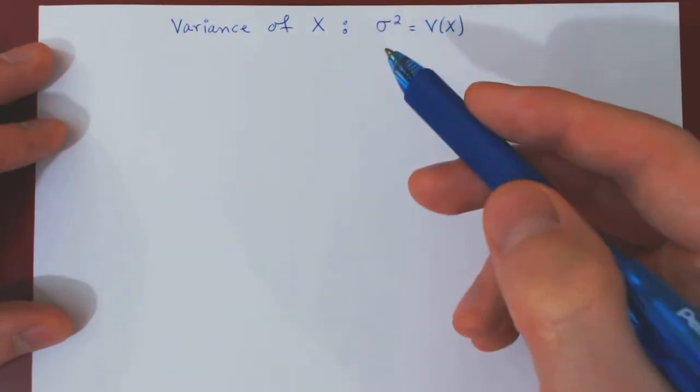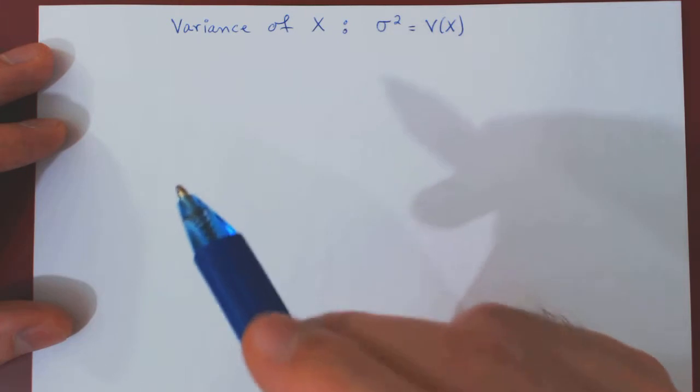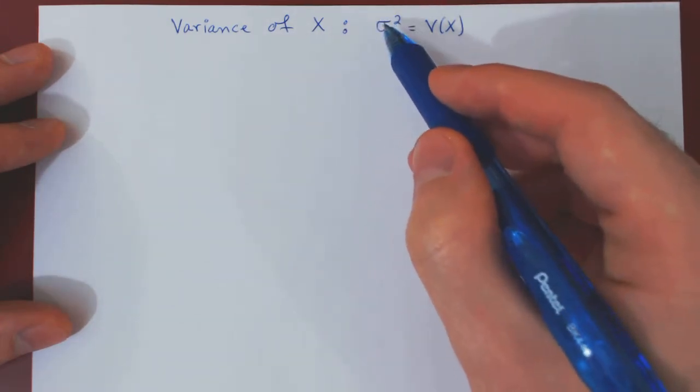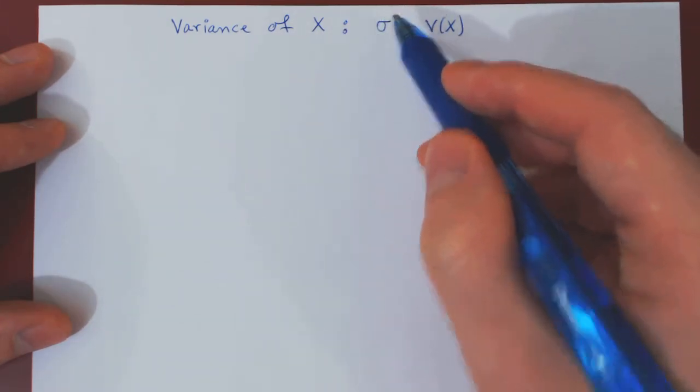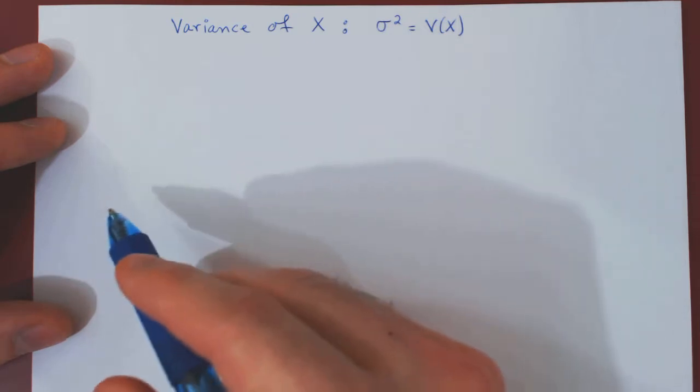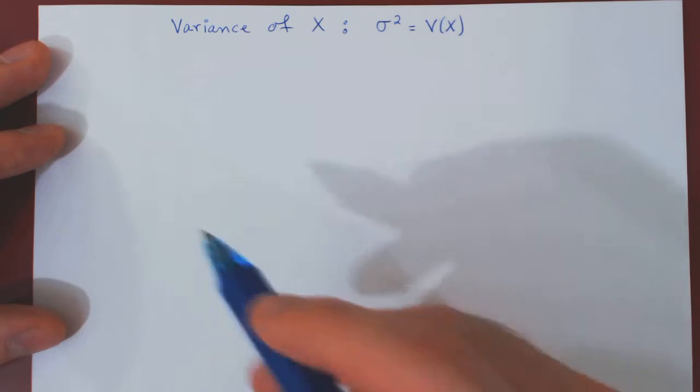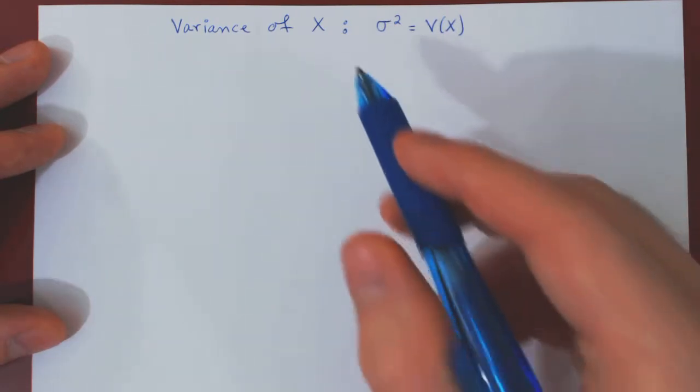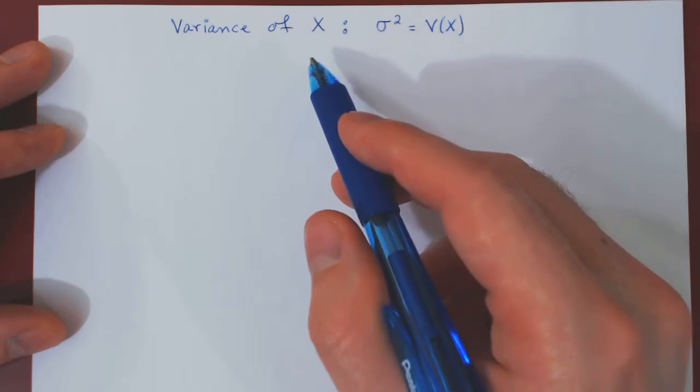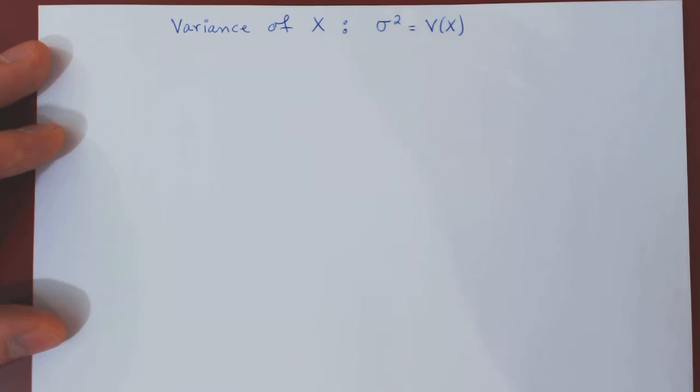We saw in the previous video how to find the mean, the average value of a random variable X, but another crucial measure is also the variance of a random variable. To illustrate what the variance measures, we'll look at two possibilities for a density function for X over the same interval. We'll see that what the variance of X measures is whether or not the weight of the density function is distributed near the average value or far away from the average value.